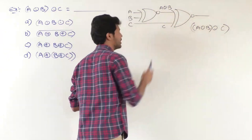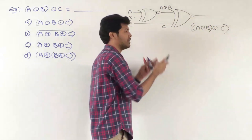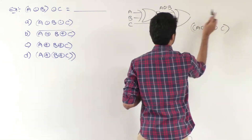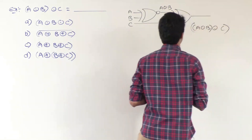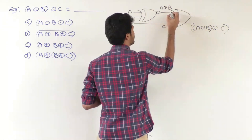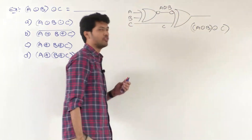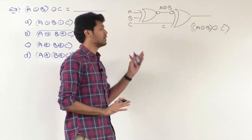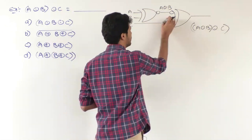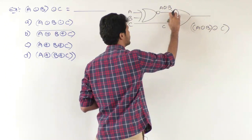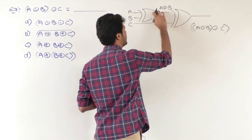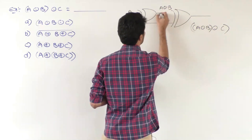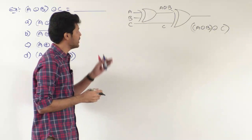Now, I can take this bubble to the input side, because one bubble either at the input side or output side doesn't matter — functionally they are exactly the same. So I will change the position of this bubble and place it at the input. Now you are having two bubbles here. Whenever you have two bubbles, you can cancel them out, because a bubble is a complementation operation — double complementation equals the function itself.